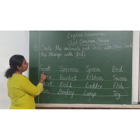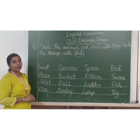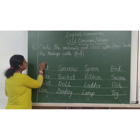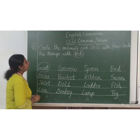G-O-A-T. Goat. Goat is animal or thing? Yes, it is an animal. So you have to circle it with your blue crayon. Goat — blue.